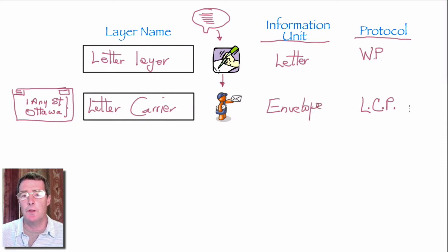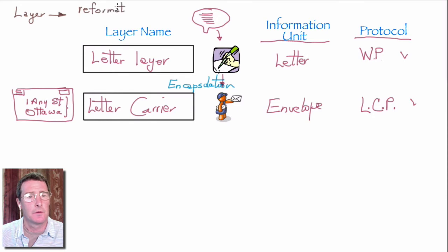Now note that the protocol at this level is very much different than the protocol at the top level because we're doing different tasks. The process of putting the letter inside an envelope actually has a name. It's called encapsulation. At each layer, layers do two main things to information. They can either reformat the information or they're going to encapsulate it.